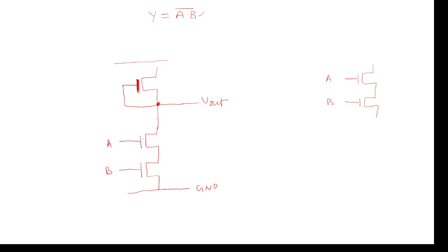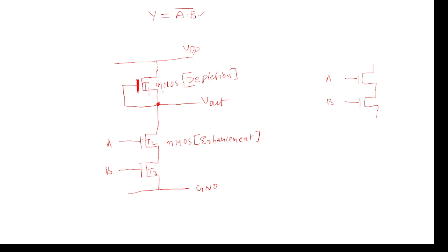The supply VDD is required here. This is the supply VDD, and this is an NMOS but it is a depletion-mode transistor — it acts as the pull-up network. These two transistors I am naming T1, T2, and T3. T2 and T3 are the pull-down transistors and they are NMOS enhancement-mode transistors. The depletion-mode transistor has source, gate, and drain terminals, and the source and gate are interconnected.